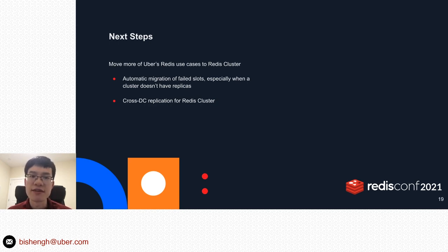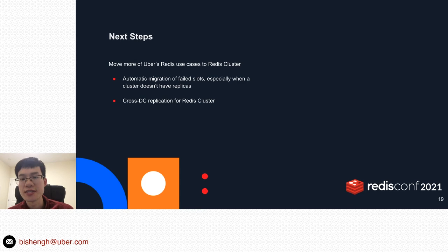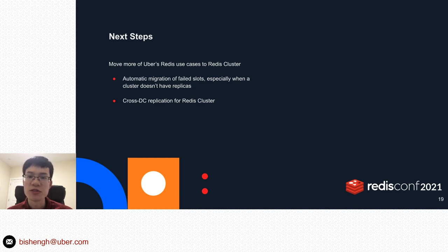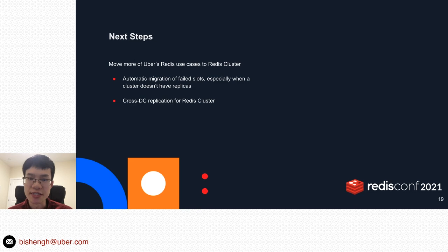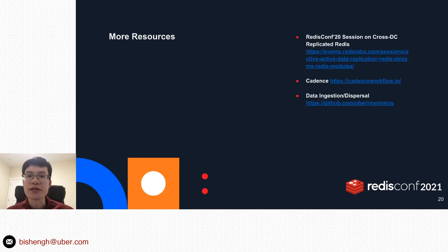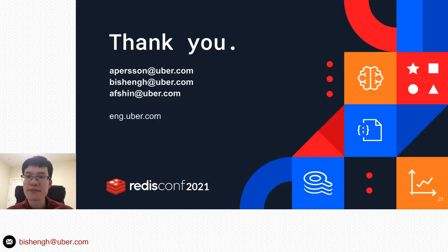Here are the next steps of our Redis cluster efforts. Uber has many existing caching use cases based on the previous Redis solution, and the long-term goal is to move those use cases to Redis cluster to consolidate our product offering. To do that, we need to tackle two things: first, support automatic migration of failed slots, especially when a cluster doesn't have replicas, since for caching use cases we'd like to run Redis cluster without replicas to optimize hardware efficiency. Second, we need to support cross-DC replication for Redis cluster before we can migrate our existing cross-DC use cases. Thank you for tuning in — we hope you've learned something from our journey to Redis cluster.